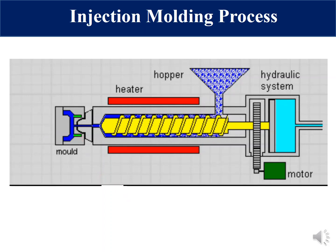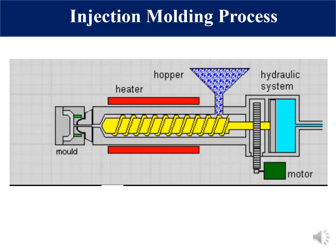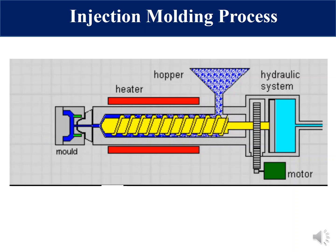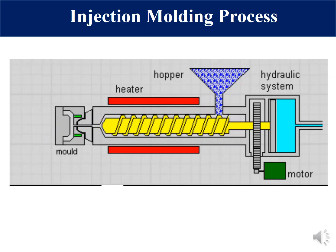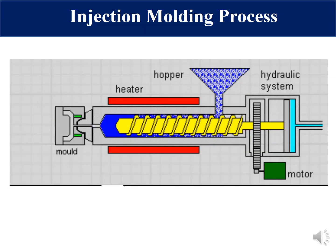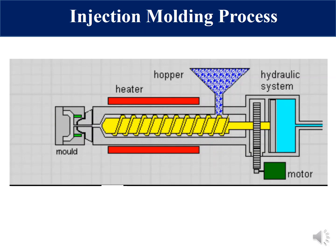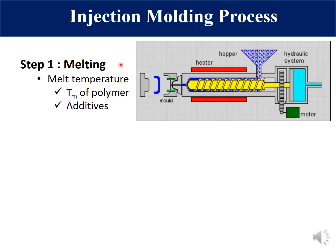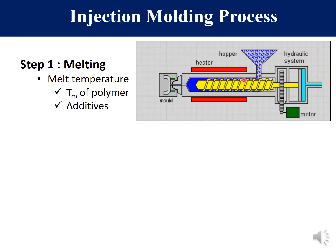To better understand the injection molding process, we can divide it into four steps, which will also help us understand the key parameters that control the process and product quality. The first step is melting. In this step, polymers fed through the hopper get melted inside the extruder and stored in front of the screw. The parameter which is very important at this step is melt temperature.